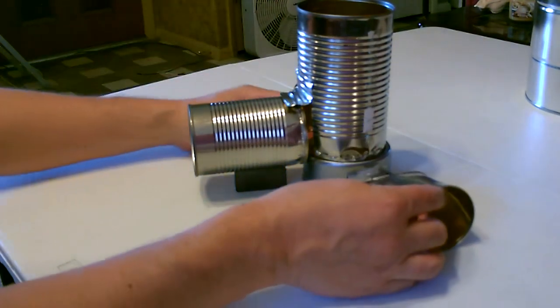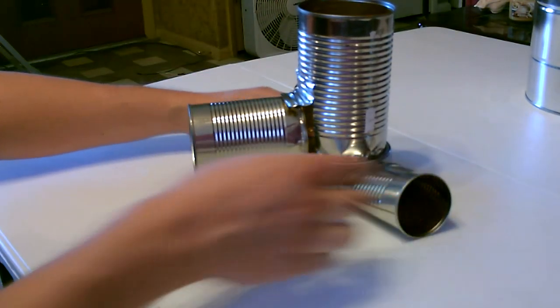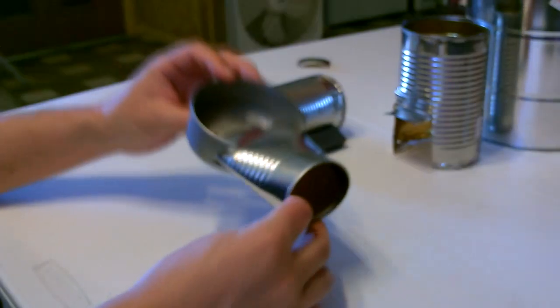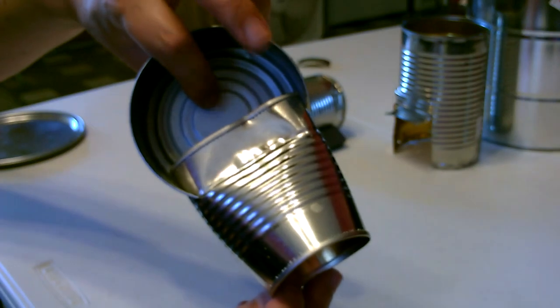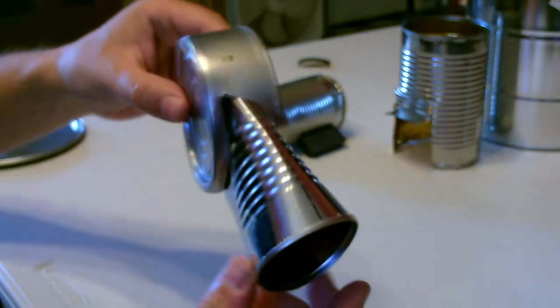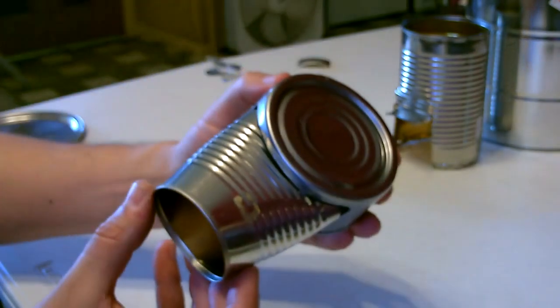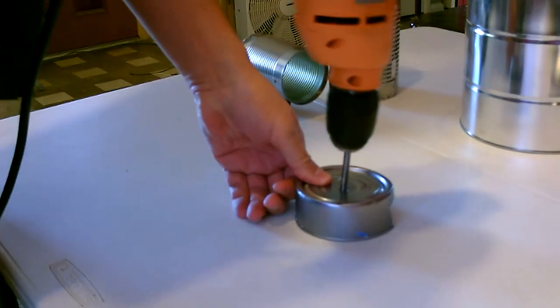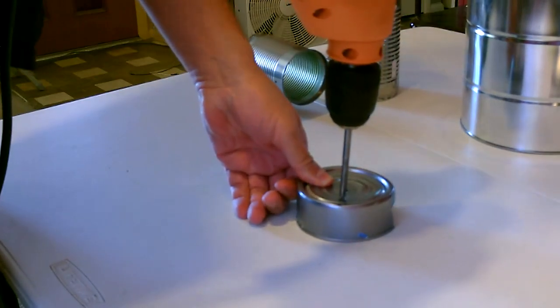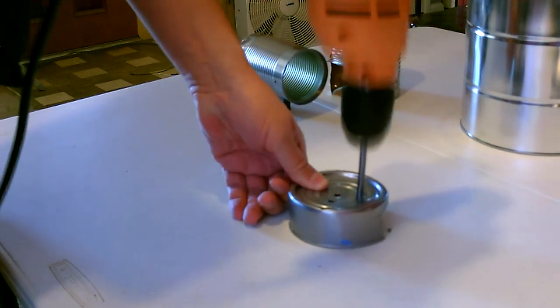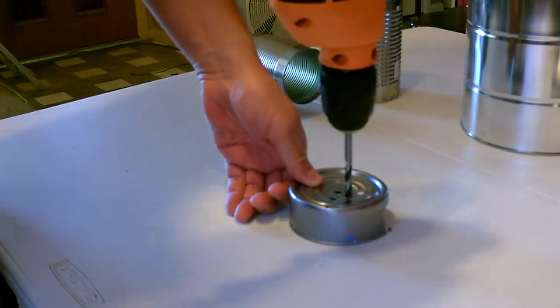And when you get that just right, it'll slip right in there. Here's a close-up of how it looks under the tuna can. We're just going to drill a bunch of holes in the bottom of this, but that'll be the air inlet. Just kind of scatter them.